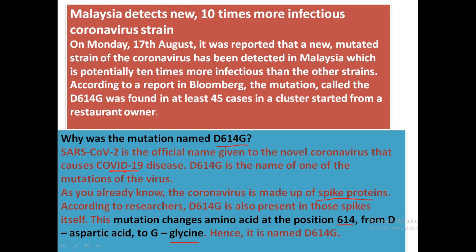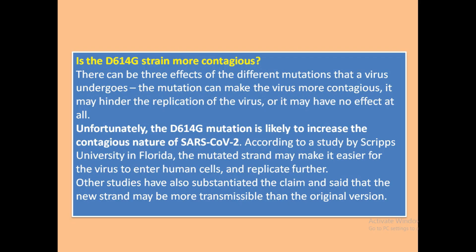This mutation changes the amino acid at position 614 from D, that is aspartic acid, to G, that is glycine — hence it is named D614G. In the original coronavirus, position 614 had aspartic acid, but due to the mutation, glycine now occupies that position.